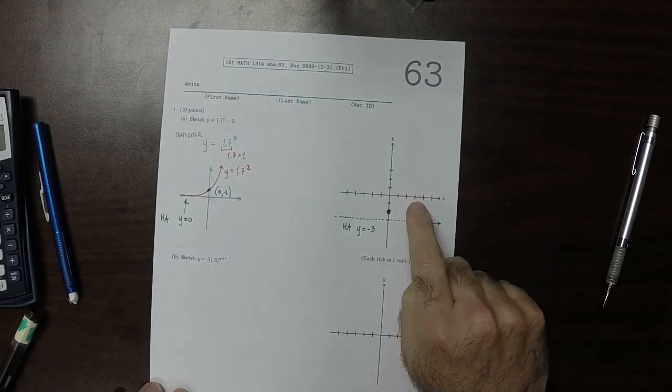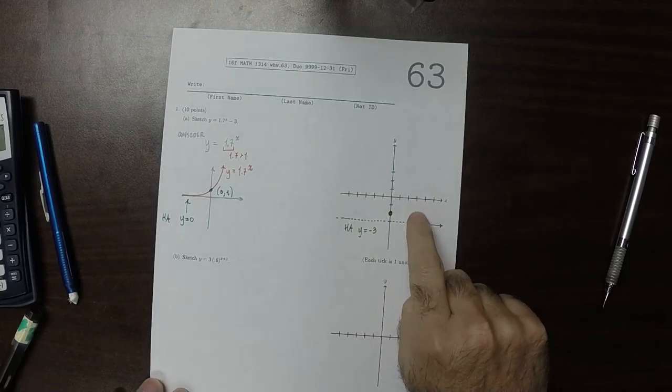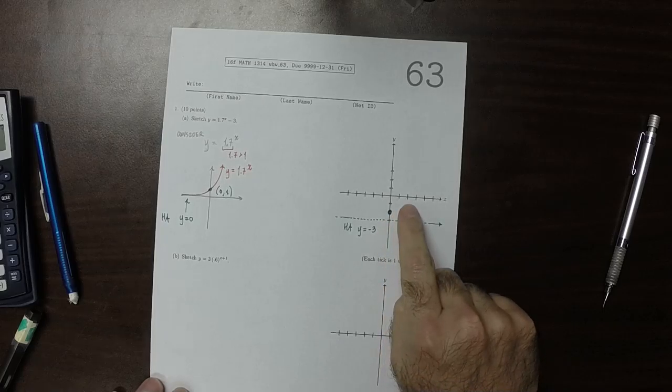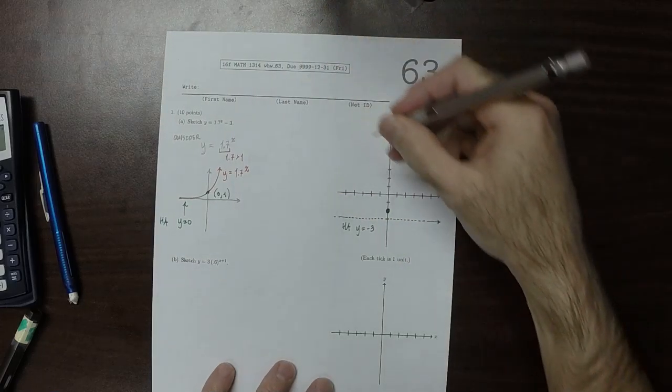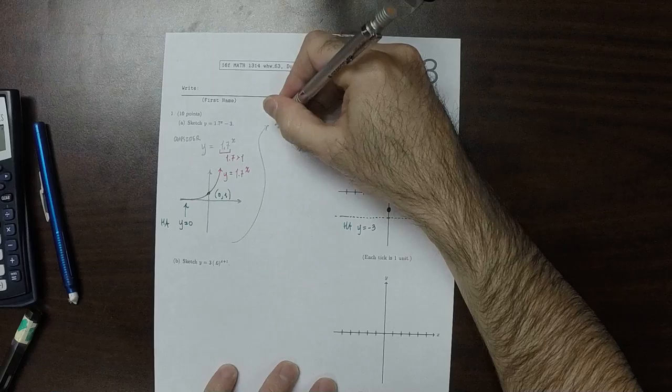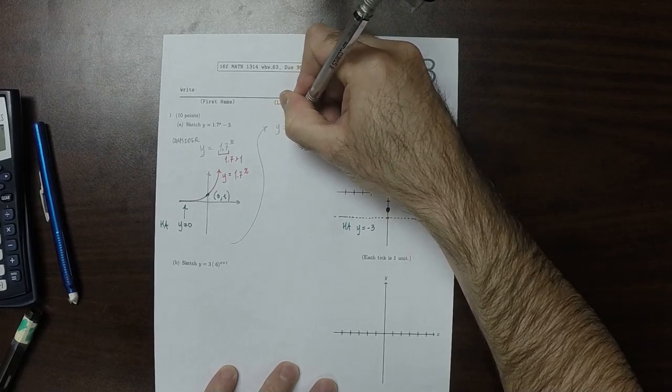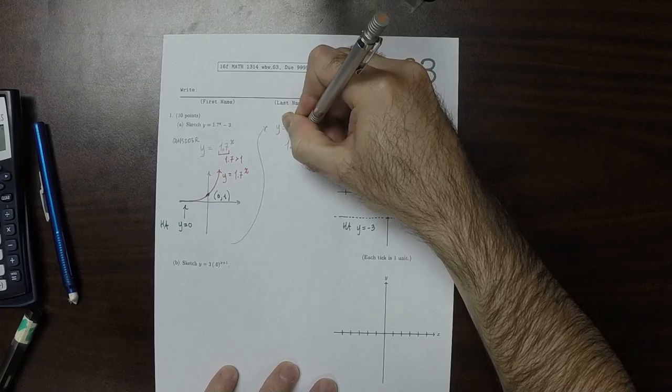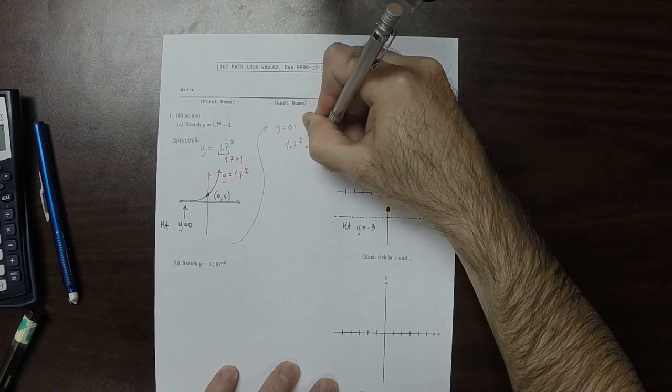And then just to get a good point on that line, how about let's solve for y = 0. So when y is equal to 0, we get that 1.7^x minus 3 is equal to 0.